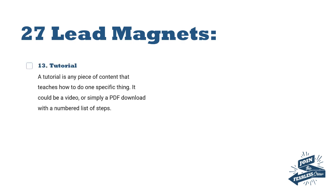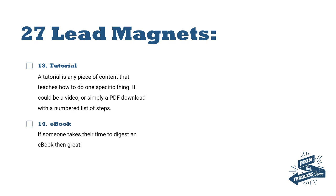Number thirteen is a tutorial — like a video or a PDF guide with a simple series of numbered steps to take people through instructions on how to build or do something. Number fourteen is an ebook. The downside to an ebook is that if it's quite long you might lose people's interest, so you've got to make sure it's interesting and delivers value.